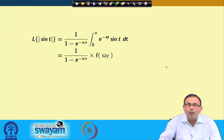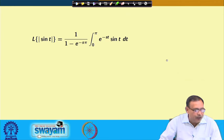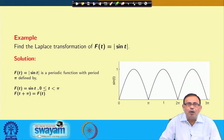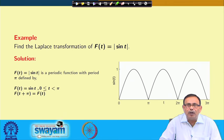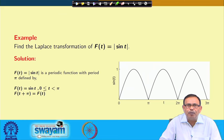Let us take the example where we want to find the Laplace transform of f(t) = |sin t|. This is a periodic function with period π, defined by f(t) = sin t for t in [0, π] and f(t + π) = f(t). On the right side you can see the graph of |sin t|: from 0 to π it appears, then from π to 2π it replicates itself periodically. We want to find the Laplace transform of |sin t|, which has period π.